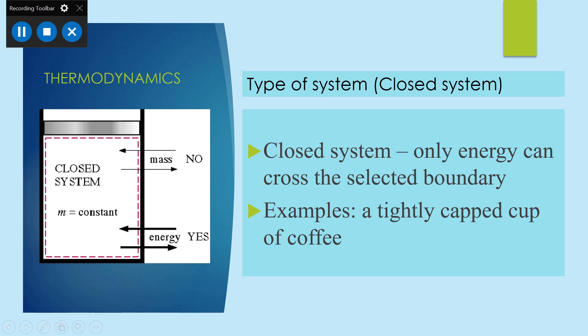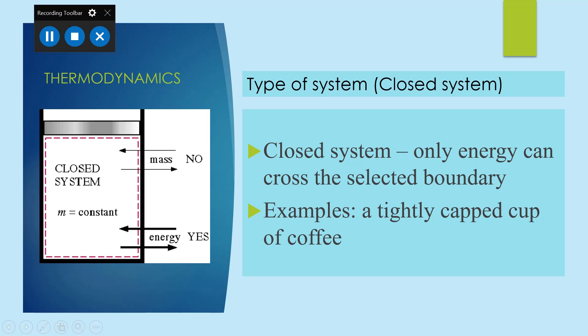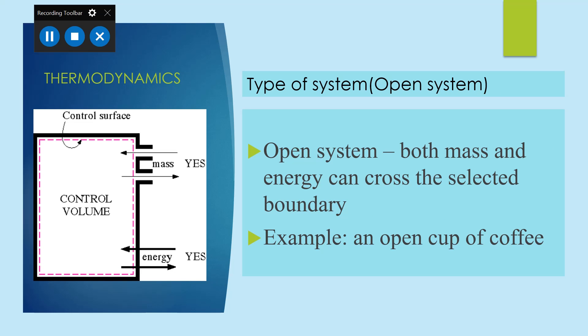The next type is a closed system. In a closed system, only energy can cross the selected boundary — heat energy can move across the boundary, but there is no mass transfer. All the mass is contained within the system; no mass moves in or out. In a closed system, the mass remains constant because there is no transfer of mass — that is known as a closed system.